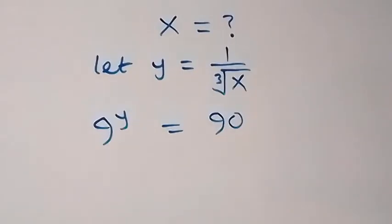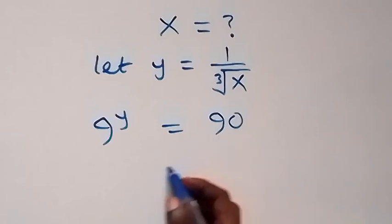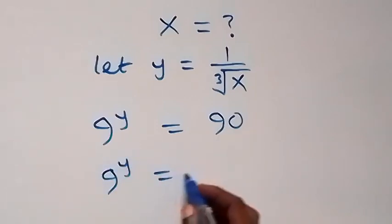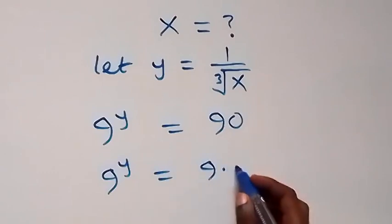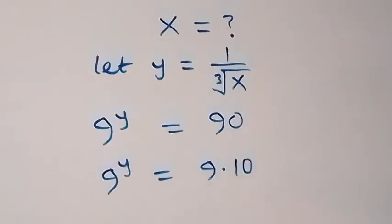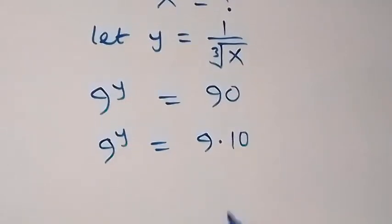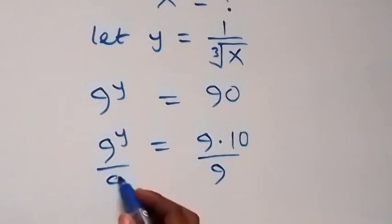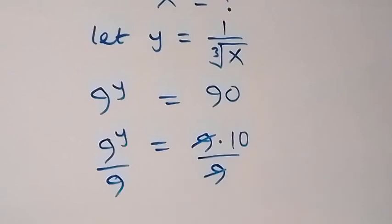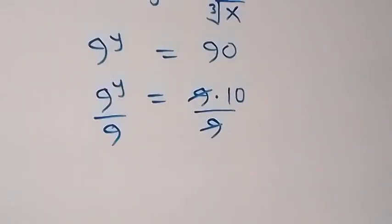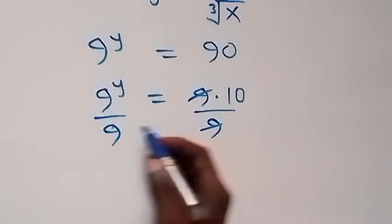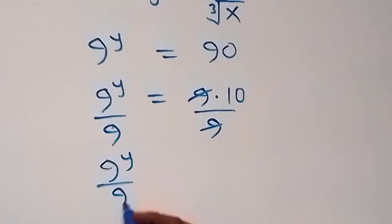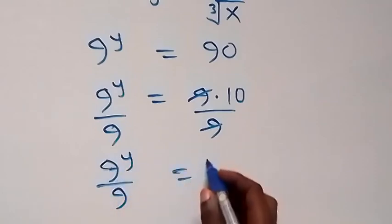The next step, we can rewrite 90 as 9 times 10, that is 9 raised to the power y equals 9 multiplied by 10. And here, divide both sides by 9. Then 9 cancels out, and we are left with 9 raised to power y over 9 equals 10.